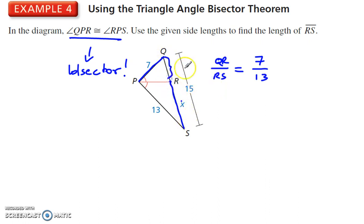This segment right here is the 15 minus the X. Take away the X, so QR is 15 minus X. The whole thing is 15, so take away the X. We get QR. RS is X equals 7 over 13. Cross multiply.